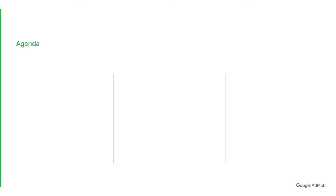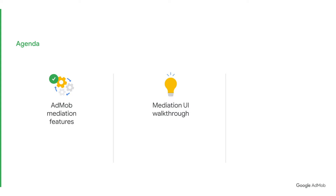Before we dive in, here's a quick overview of the topics we'll cover in this video. First, we will highlight three important features that will help you use AdMob Mediation effectively. After that, we will walk you through the steps to set up Mediation in your AdMob account. Finally, we will show you the AdMob Mediation report where you can check key metrics for your mediated ad networks.